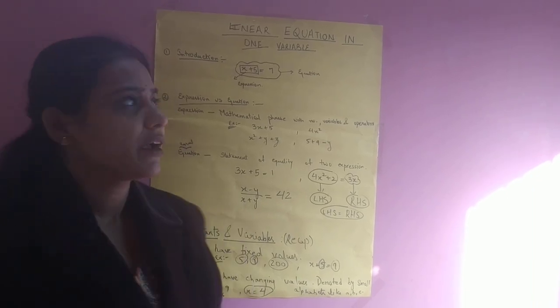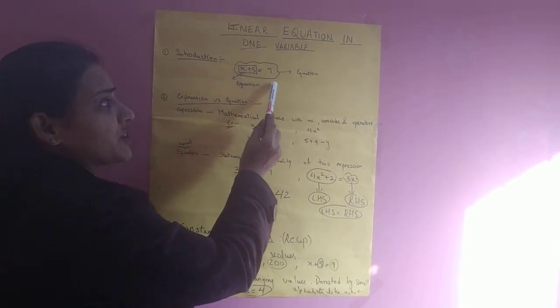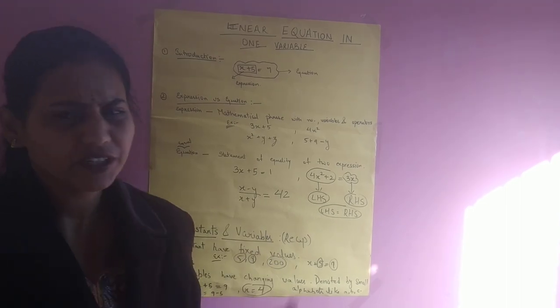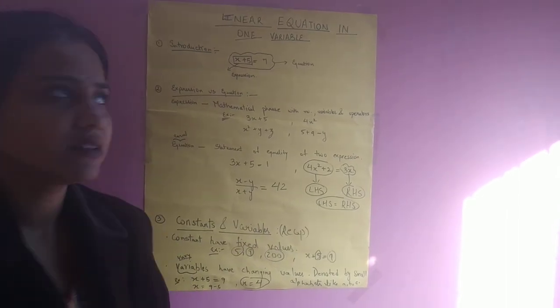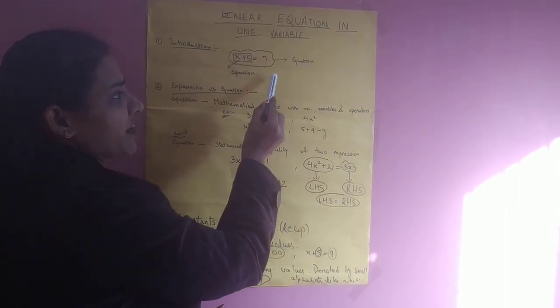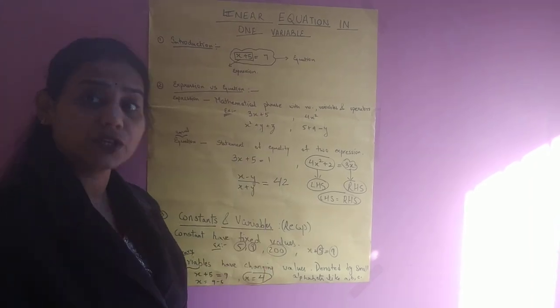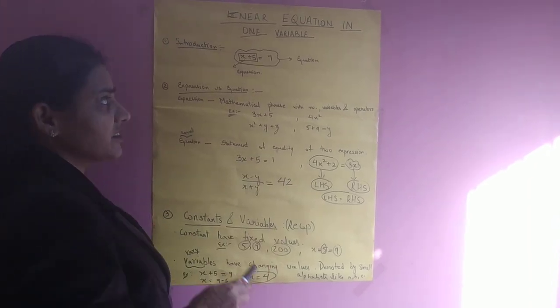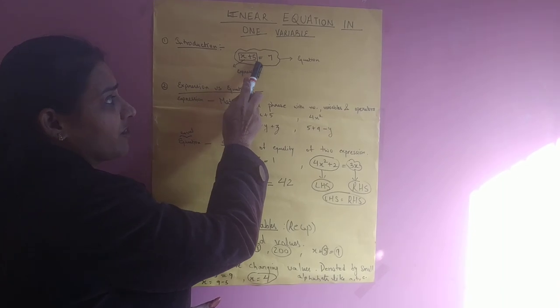Let us take an example before starting with the linear equations. x plus 5 equals 7. What is it known as? This whole x plus 5 equals 7 is known as the equation, while at the same time x plus 5 is known as the expression.